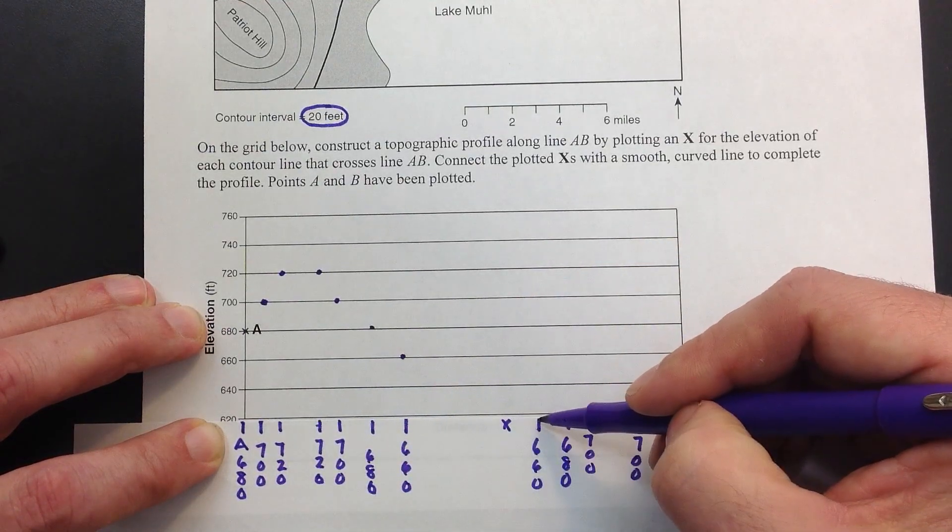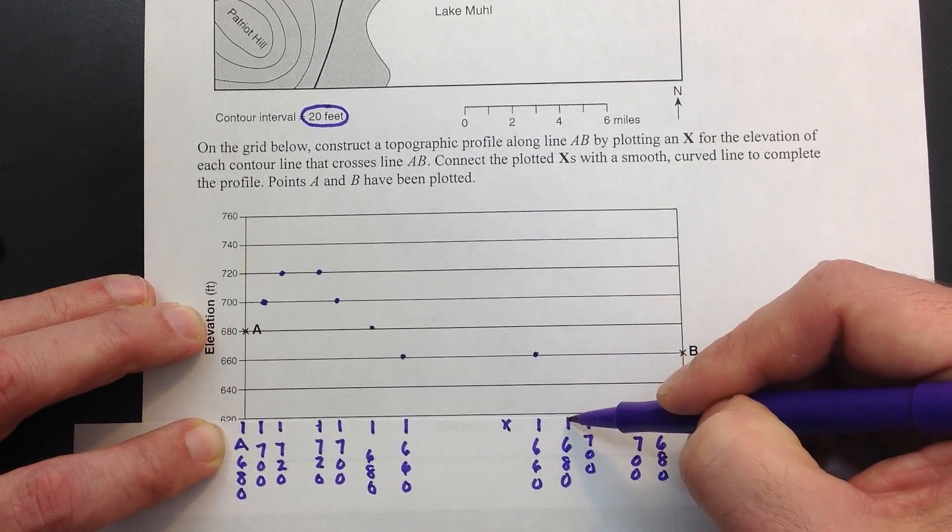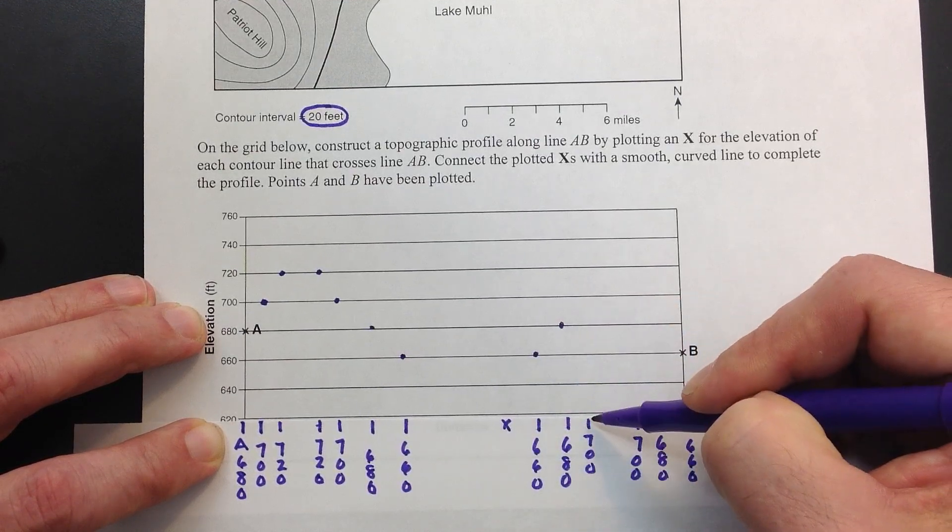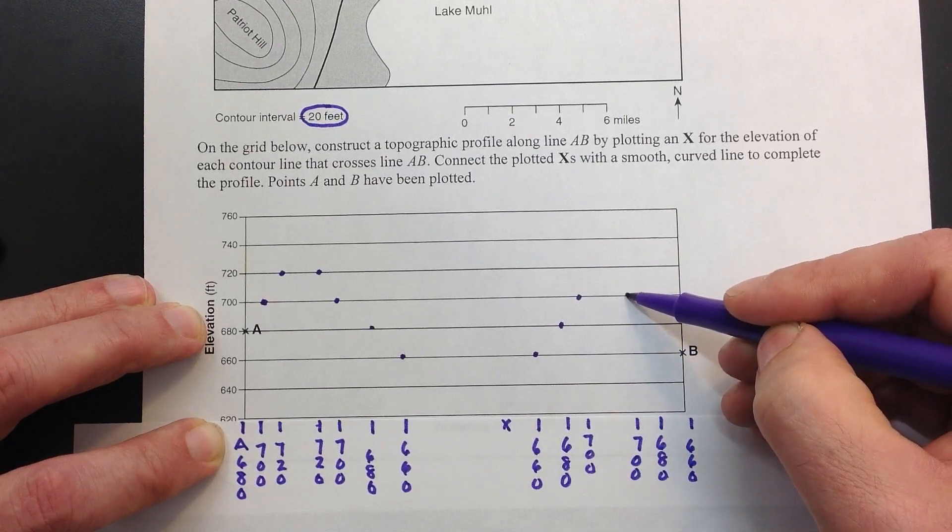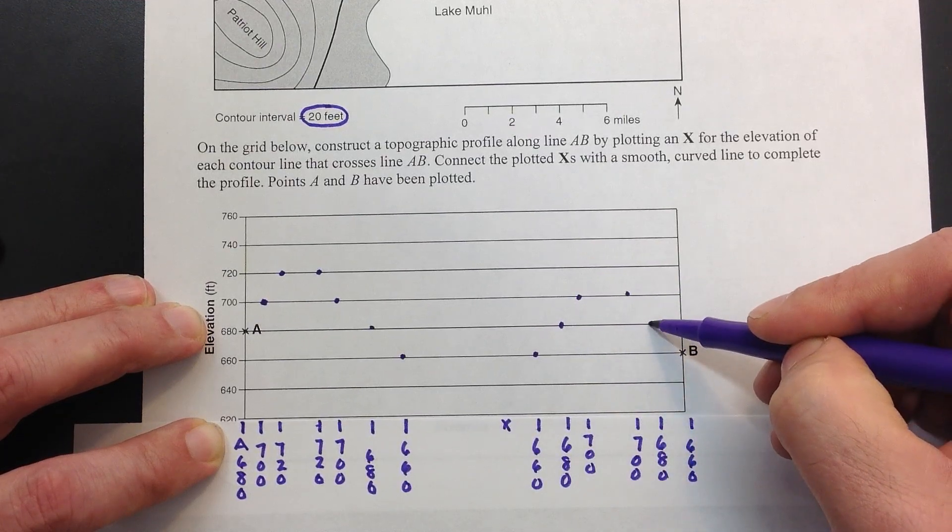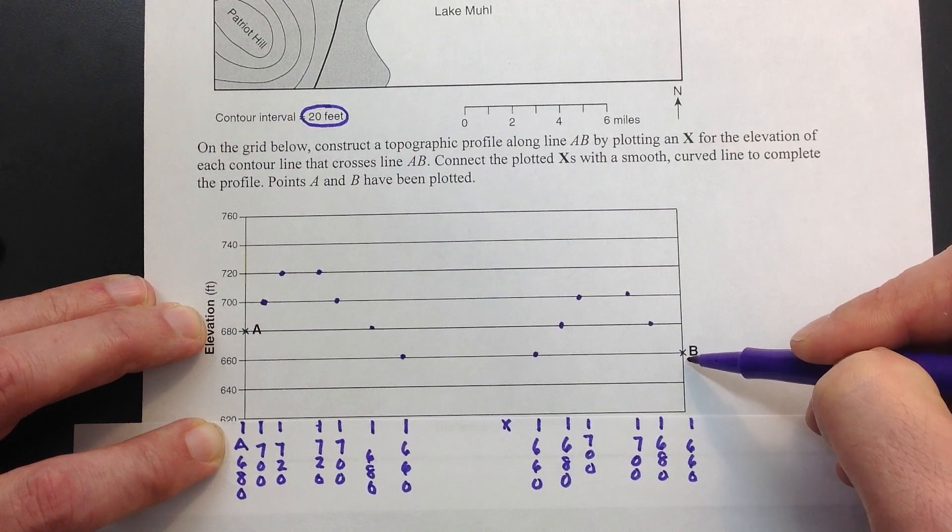There's my river, don't worry about that. 660, straight up. 680. 700. 700. 680. And then down to B which is 660.